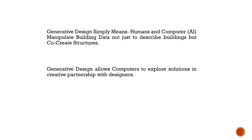To communicate with a computer, conventional programming methods use languages like C++, Python, .NET, and Java. But instead of these conventional programming languages, we can use visual programming to communicate with a computer and manipulate data.